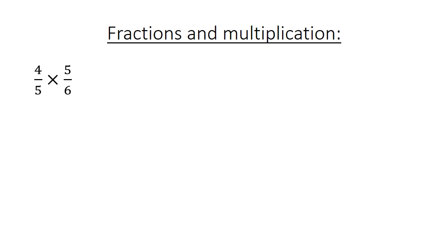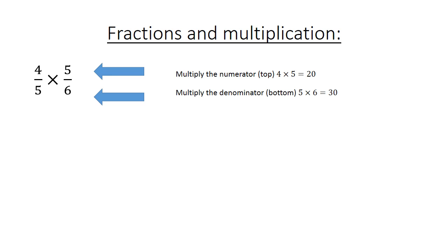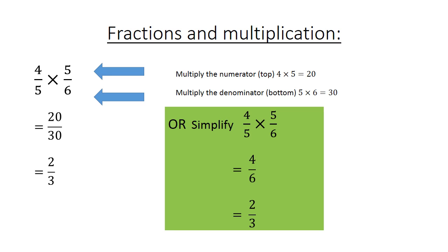Fractions and multiplication: 4 over 5 times 5 over 6. Multiply the numerator — the top: 4 times 5 equals 20. Multiply the denominator — the bottom part: 5 times 6 equals 30. That gives 20 over 30. Simplify to get 2 over 3. Alternatively, you can cancel out the 5s: 5 divided by 5 is 1, leaving 4 over 6, which equals 2 over 3.